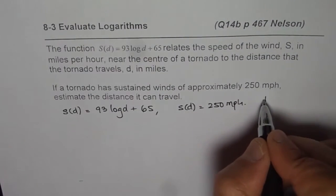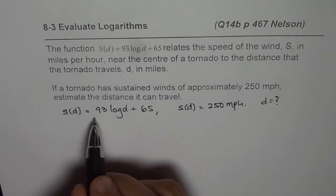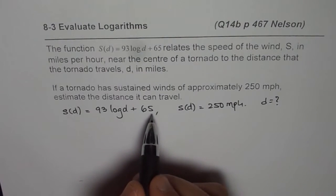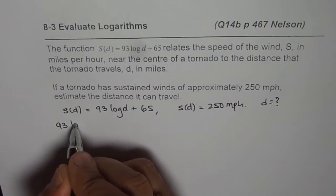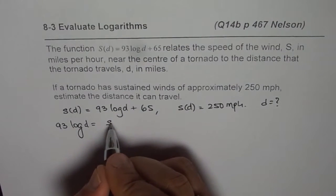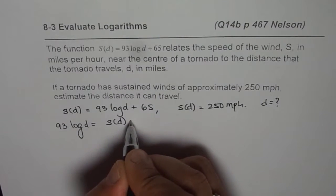We need to find what distance is correct. So we can actually rearrange this equation and then calculate. So we can write 93 log of D is equals to S(D) minus,